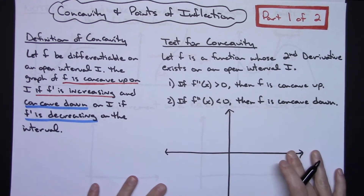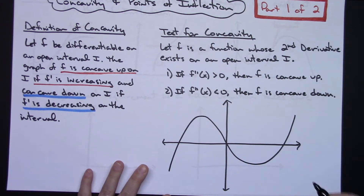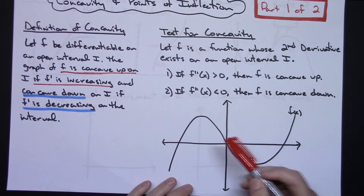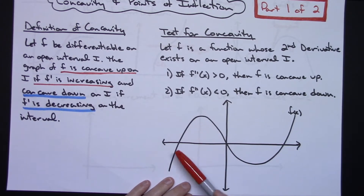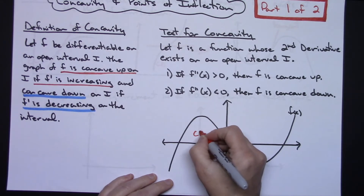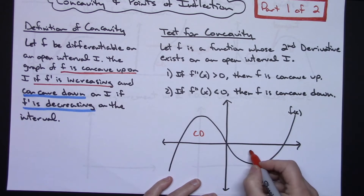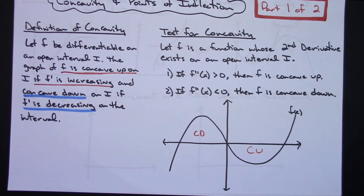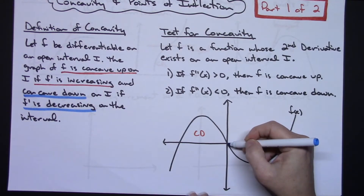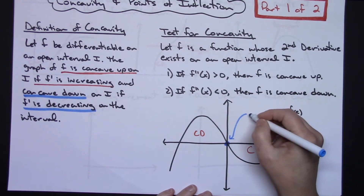To give you an idea of what this looks like pictorially — suppose I've got some random polynomial curve. This area right in here is concave down because it's trapping things in a downward motion. Then right in here, where the graph changes direction, you have concave up. The point along the curve where it changes from concave down to concave up is called a point of inflection.